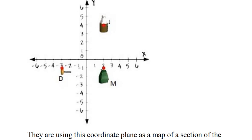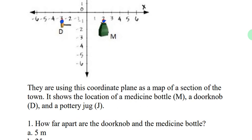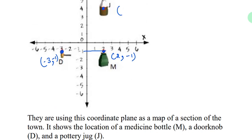So this is the graph we have. This is your point M, this is your point D, and this is your point J, where you can see these red dots. They are using this Cartesian plane as a map of sections of the town. It shows the location of a medicine bottle M, a doorknob D, and a pottery jug J. So we have 3 points given as M, D, and J. Point M is at 2 comma minus 1. Point D is at minus 3 comma minus 1. And point J is at 2 comma 4.